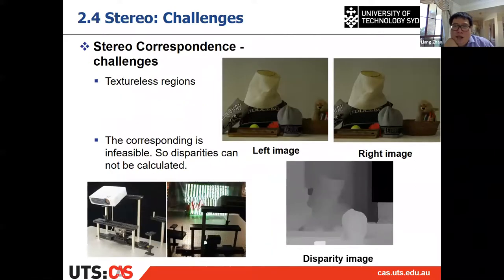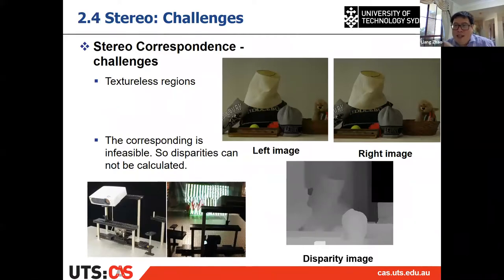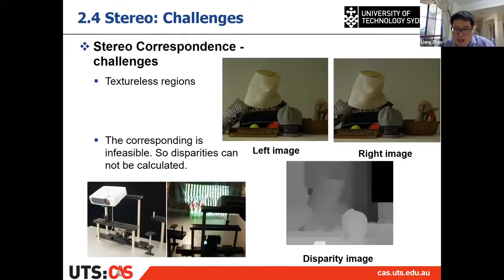Another challenge is texture-less surfaces. For example, a plain wall has no features, so you can't get correspondences and can't do the triangulation. The triangulation is based on finding corresponding points in both images. This is why we have RGB-D cameras — they use structured light and don't rely on texture.